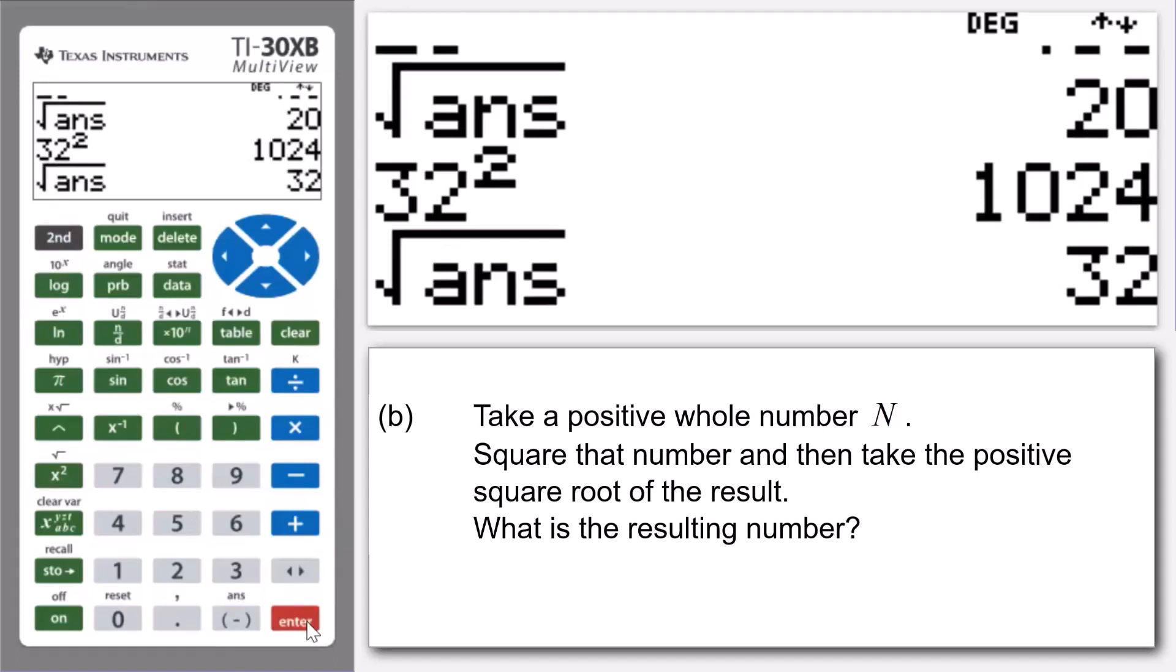Square that number and then take the positive square root of that number or of the result. What is the resulting number? And what we've been able to show is that the resulting number in each case is N, the number that we started with.